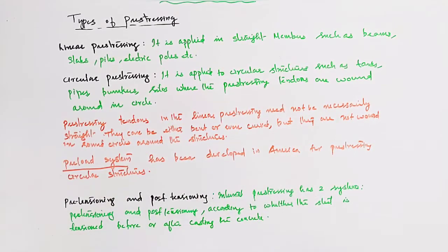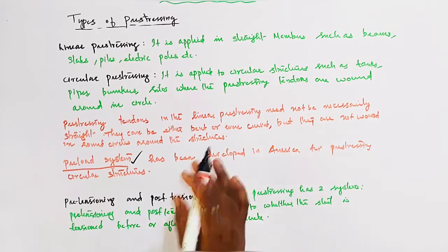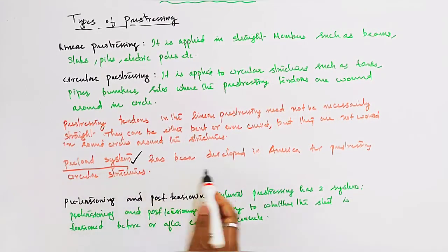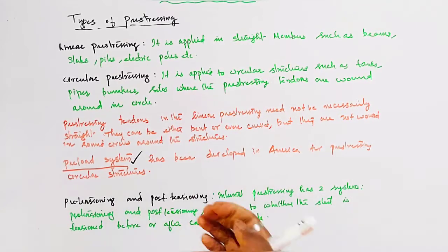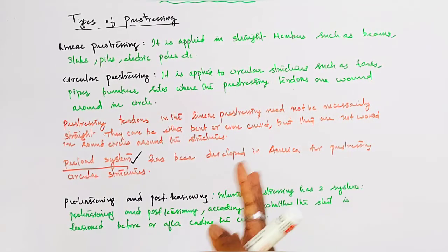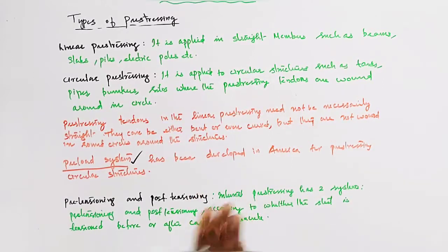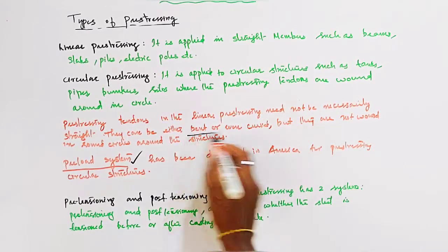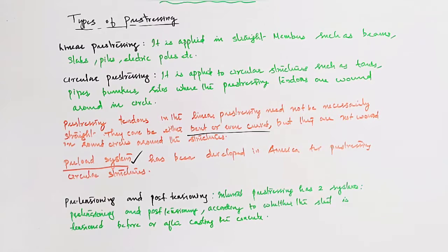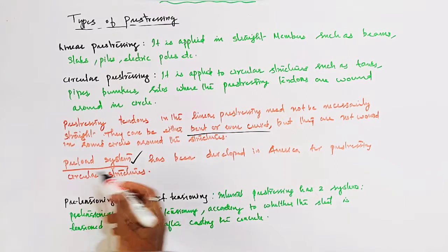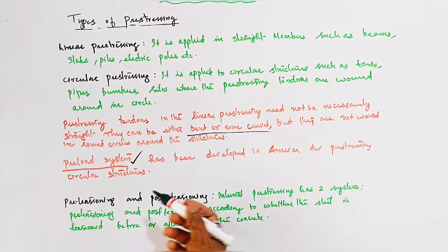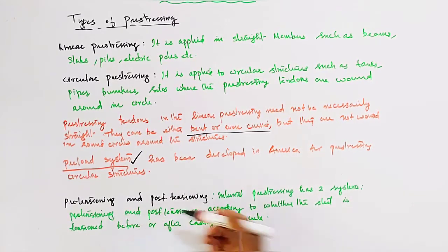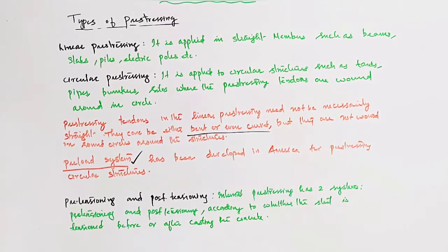A pre-load system has been developed in America for pre-stressing circular structures. Linear pre-stressing tendons can be straight, bent, or curved. This is the last type of pre-stressing - pre-tensioning and post-tensioning.